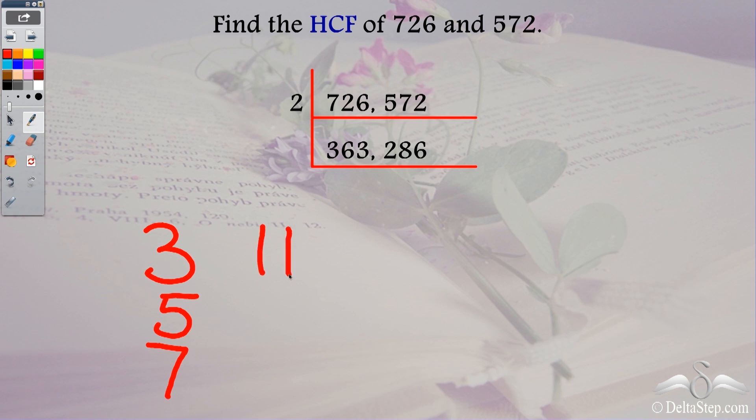Now these two are actually divisible by 11. So I divide them by 11 and I get the quotients as 33 and 26. So if I divide 363 by 11 the quotient is 33 and if I divide 286 by 11 the quotient is 26.